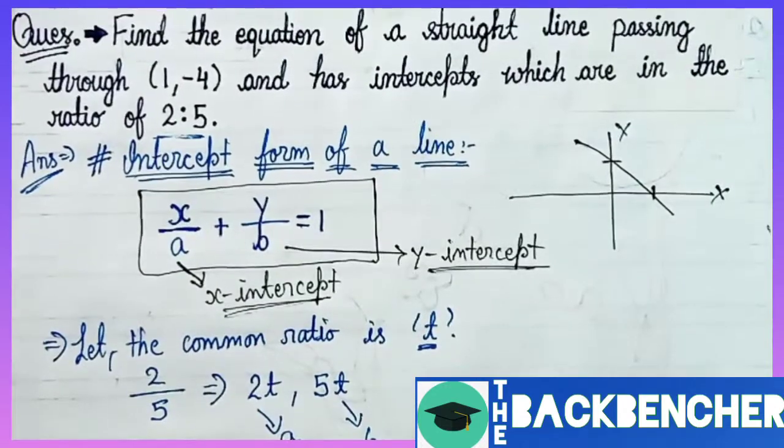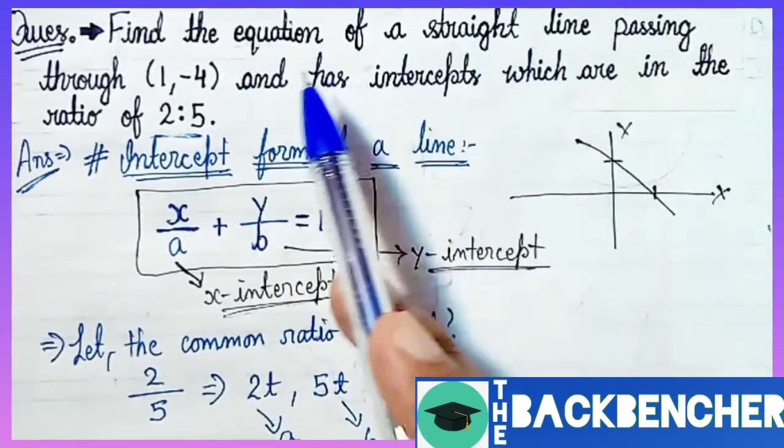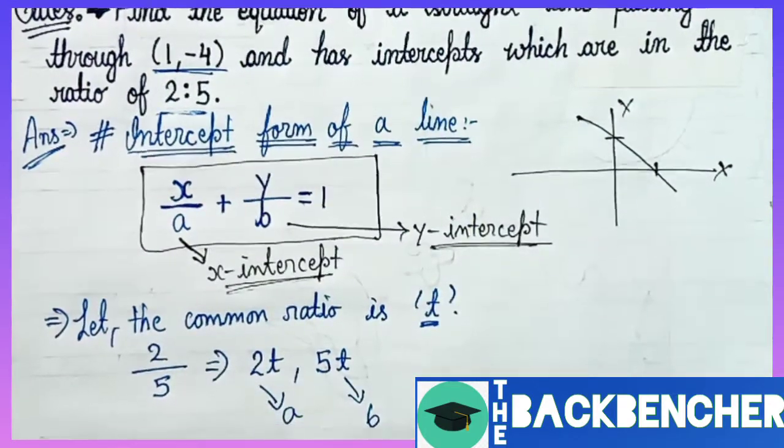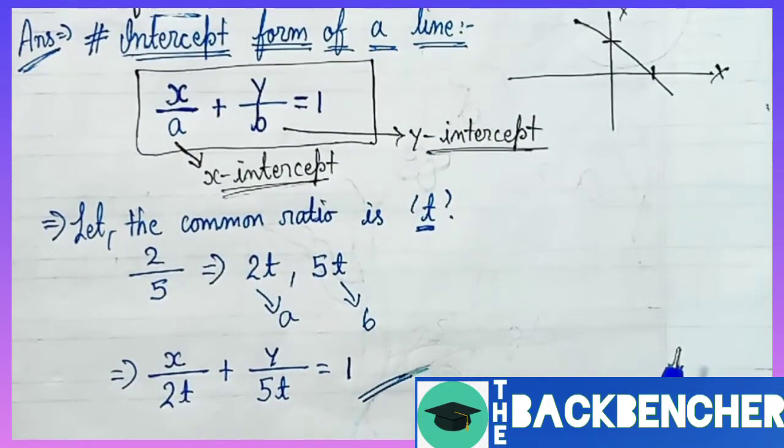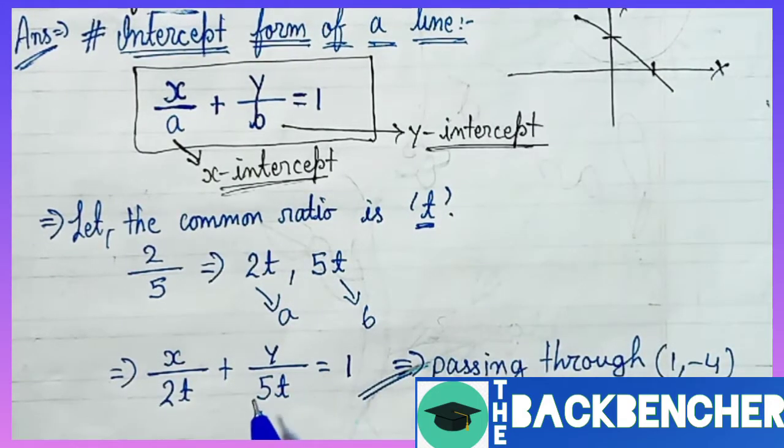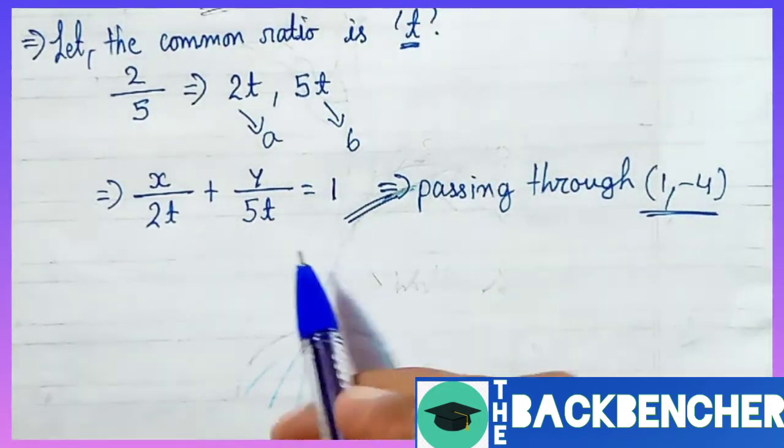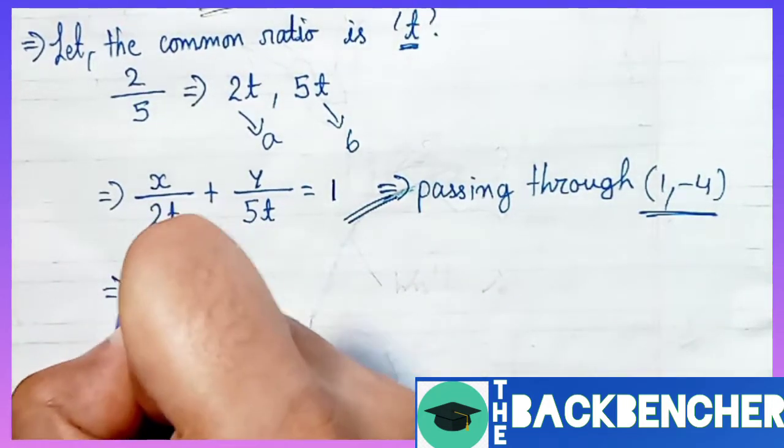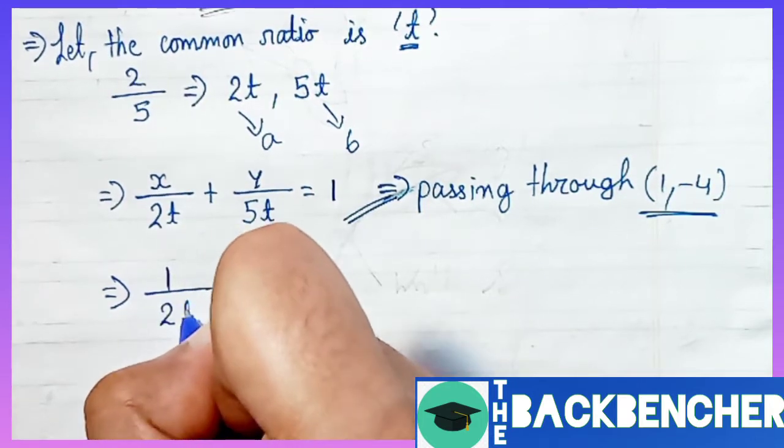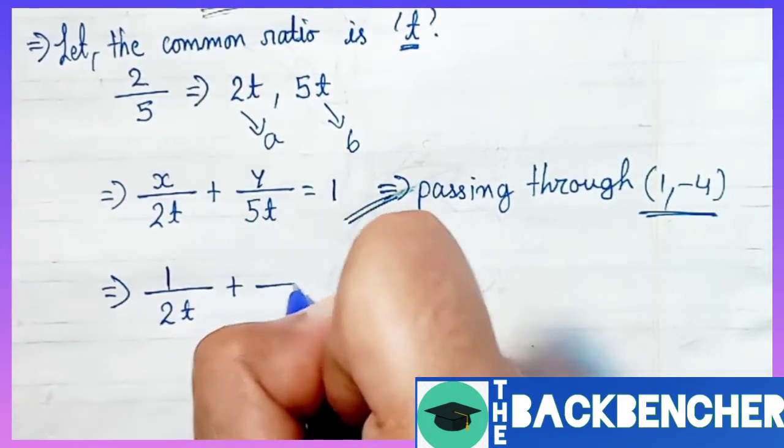Now, in the question the second point says the equation of a straight line is passing through this point, that is (1, -4). This line crosses this point. That means if you put the value of x and y coordinates in that line, then it must satisfy that line equation.